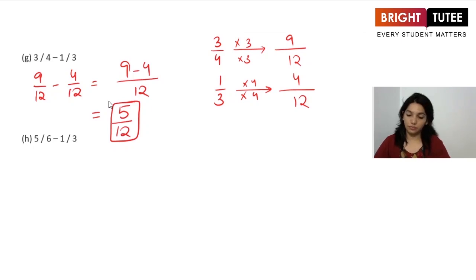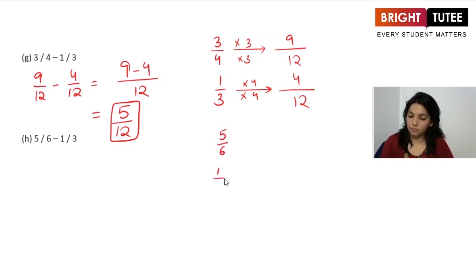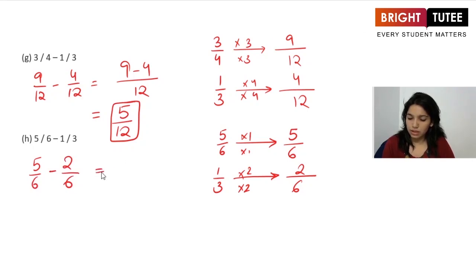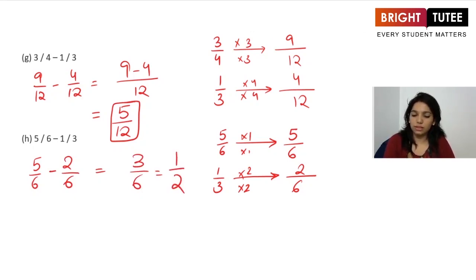Next subtraction: 5/6 minus 1/3. The LCM of 6 and 3 is 6 itself. Multiplying 1/3 by 2 gives 2/6, while 5/6 stays as is. So 5/6 minus 2/6 equals 3/6. We can simplify further: 3/6 simplifies to 1/2. That is our final answer.